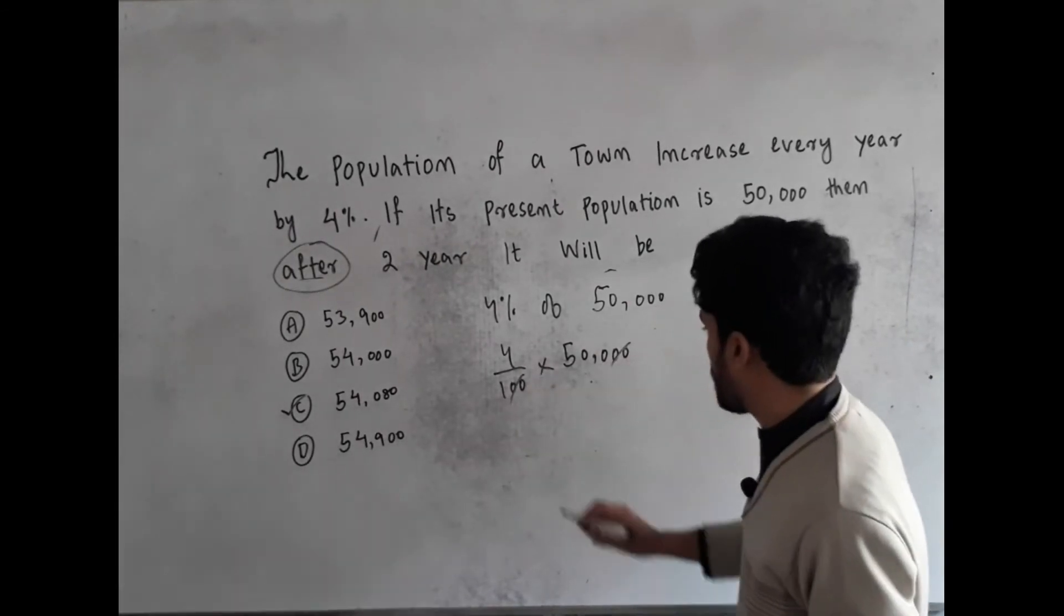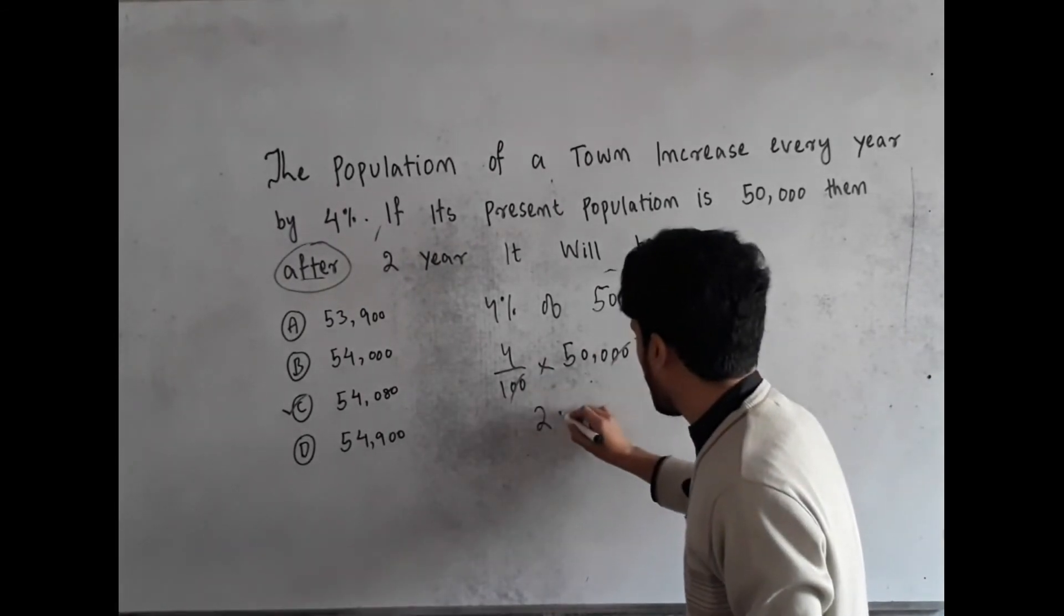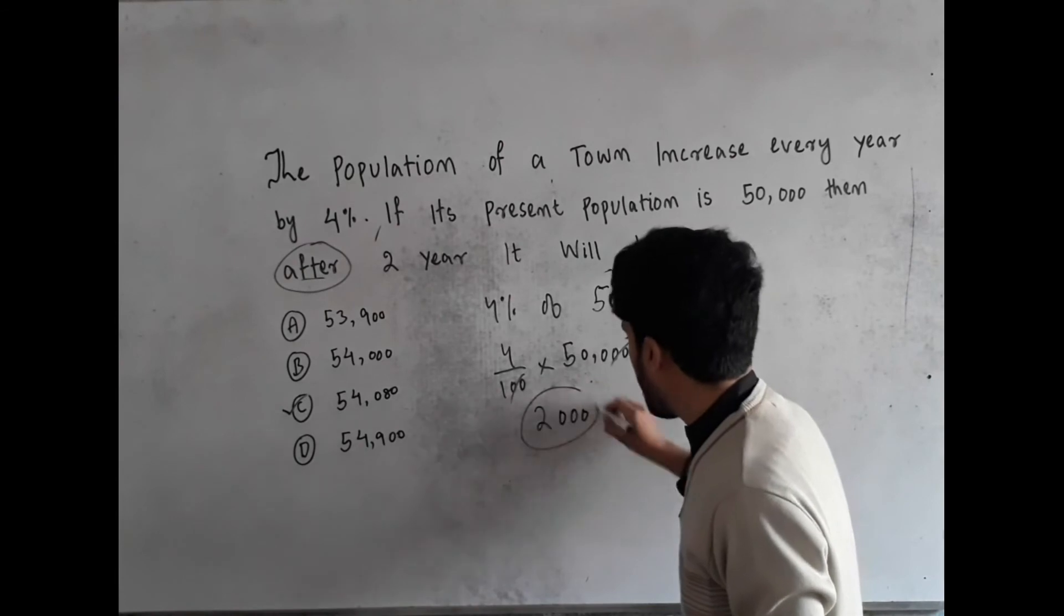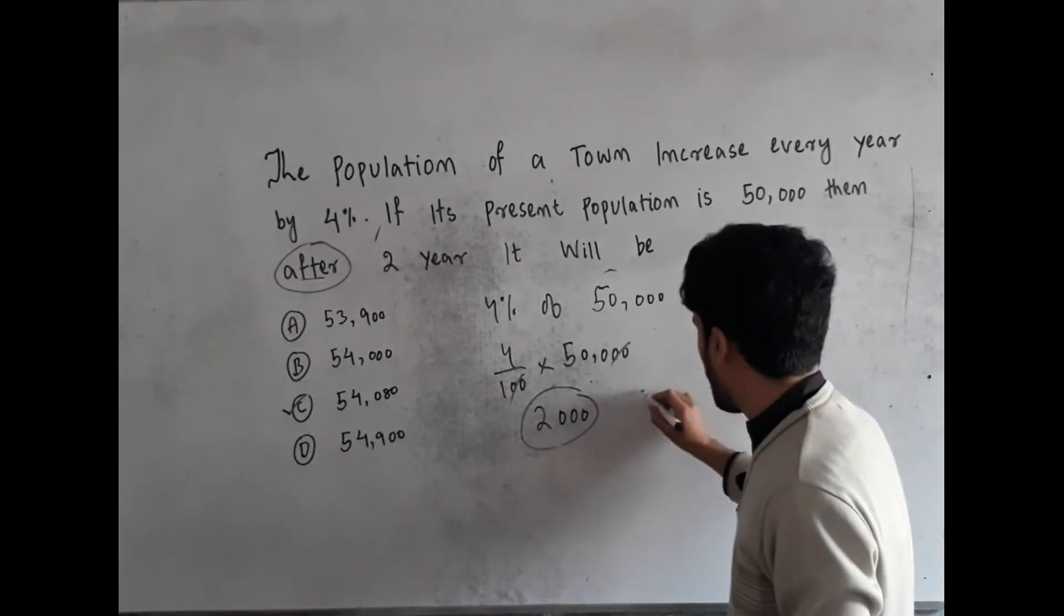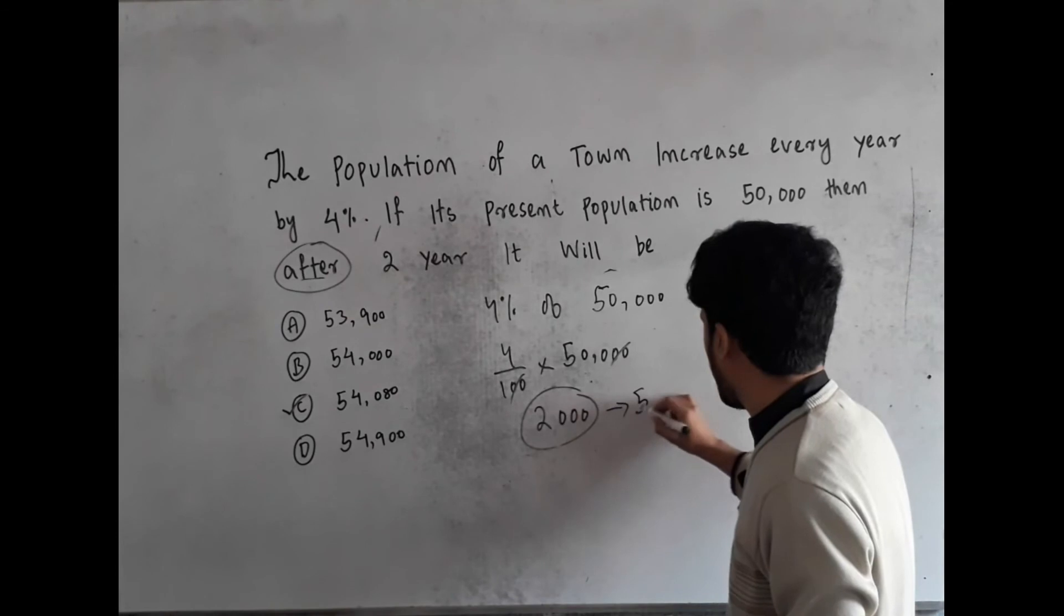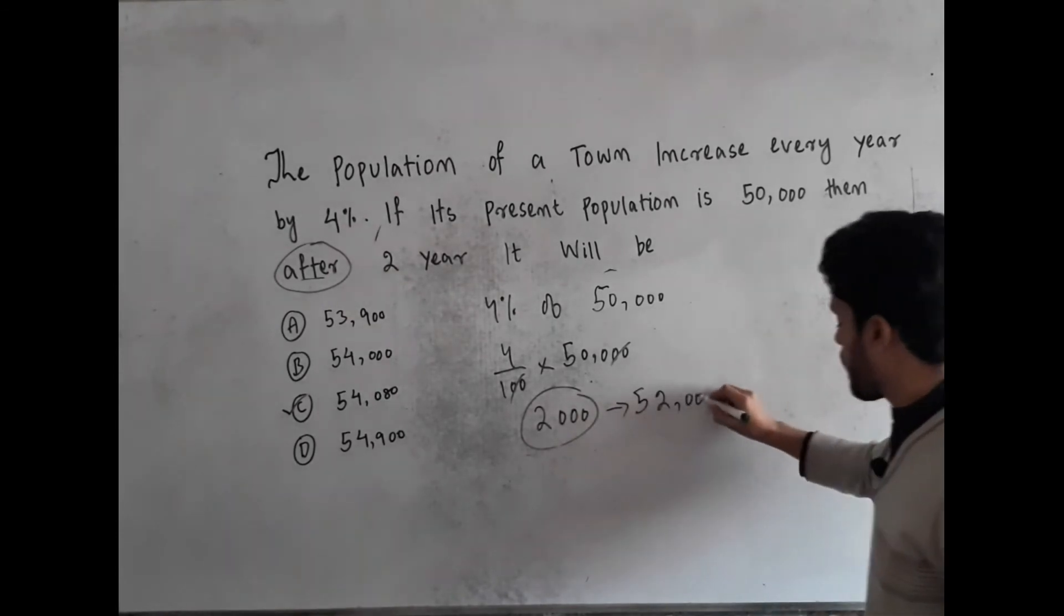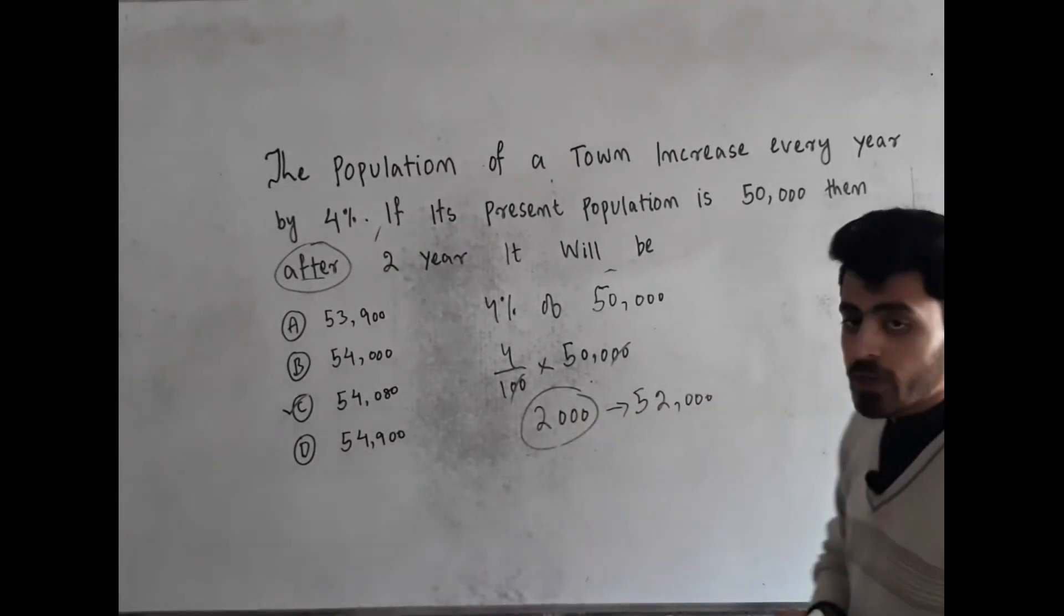Cancel this 2,000 with this one and it would be equal to 2,000. Add this 2,000 with the 50,000. It would be equal to 52,000.